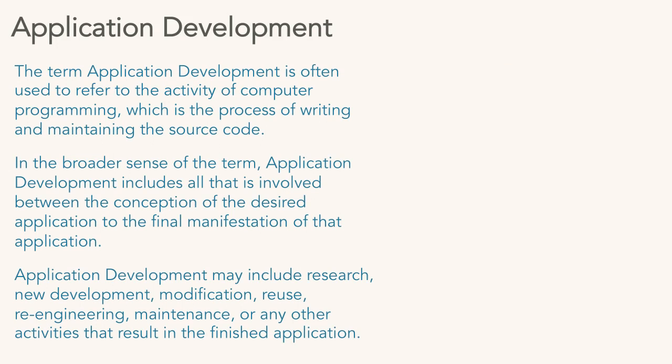The term application development is often used to refer to computer programming, which is the process of writing and maintaining source code. Source code is kind of like the master document — the master code. Any changes that get made to a program, developers go in and change the source code.